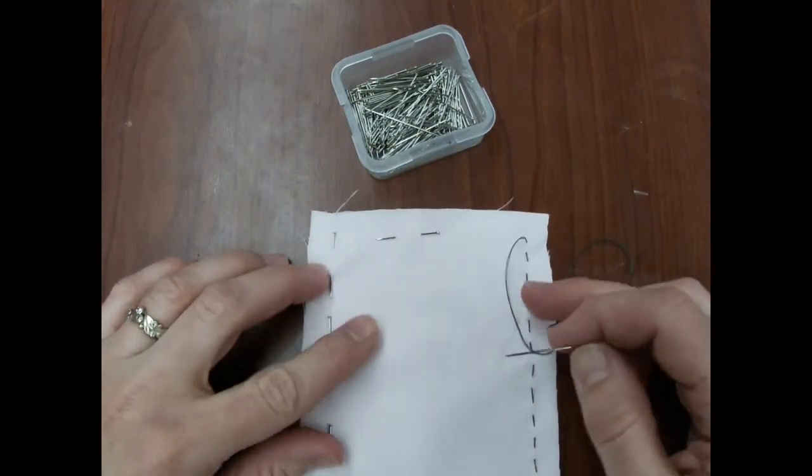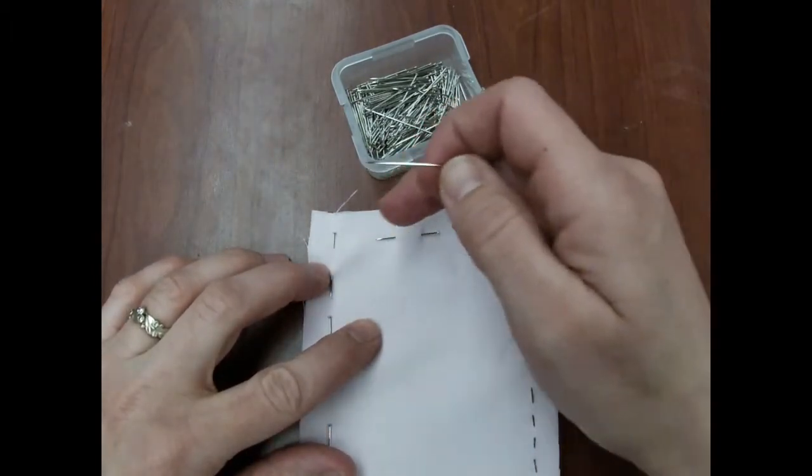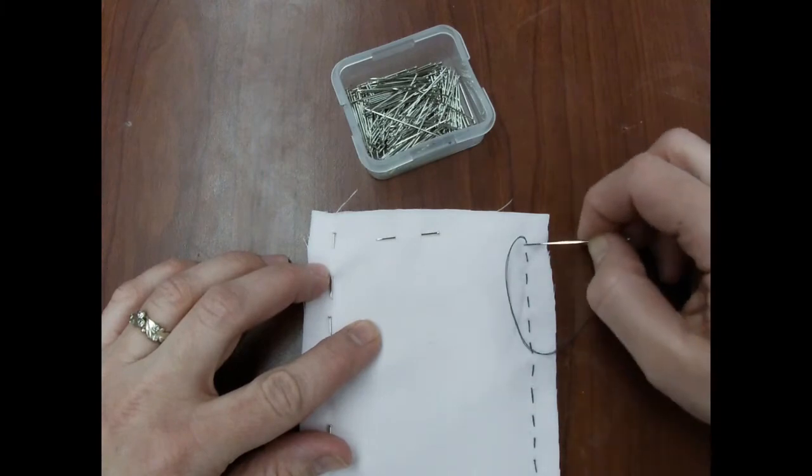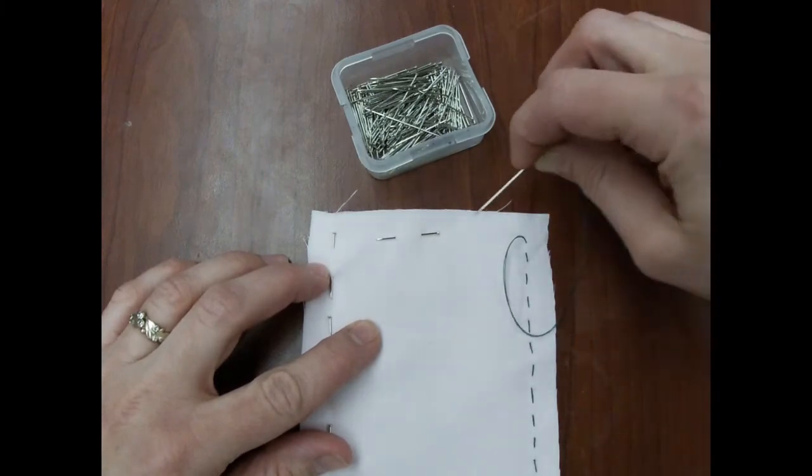A lot of the time, when kids get to a place to turn a corner, they will ask, how do I sew around a corner? Well, you just change direction. You're going this way, and now you're going to go that way.